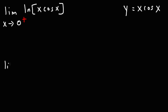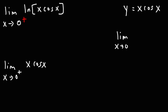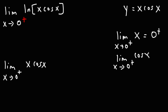In order to evaluate the limit as x approaches 0 from the right of the inside function, it's helpful to know what these values are independently. The limit as x approaches 0 from the right of x is going to be 0 from the right. And the limit as x approaches 0 from the right of cosine is going to be 1, since cosine of 0 is 1.